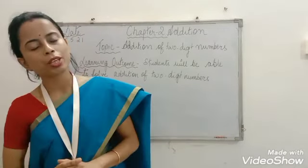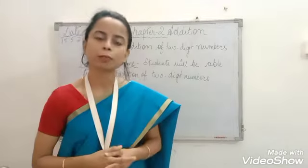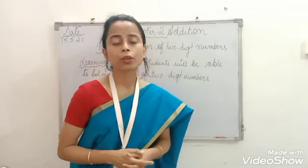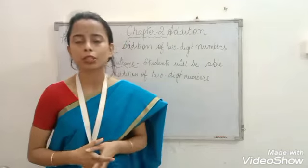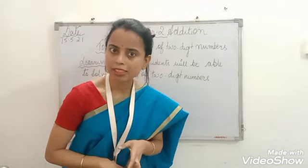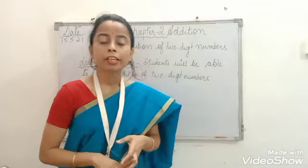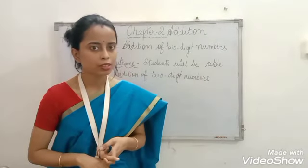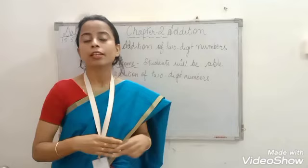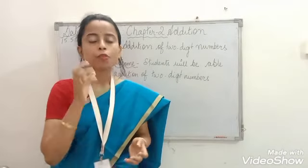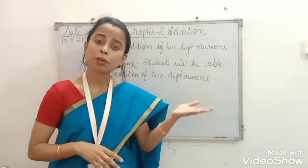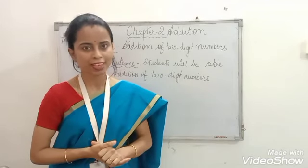In our previous class, we completed Chapter Number 1, which was about numbers. In Chapter 1, what did we learn? We learned expanded form of 4-digit numbers, place value of 4-digit numbers, comparing 4-digit numbers, ordering numbers, forming greatest and smallest numbers, and also ordinal numbers.